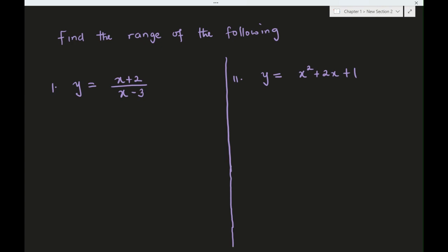Here we have to find the range of the function. Just like I did in my last video, I'll go ahead and find the domain first. This is a rational function, so the domain will be all real numbers except the zero of the denominator. The zero of the denominator is 3, so the domain is (-∞, 3) ∪ (3, ∞).